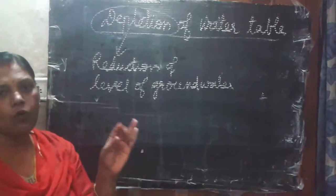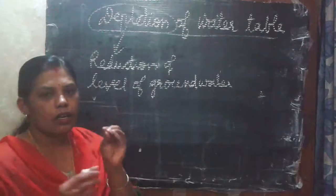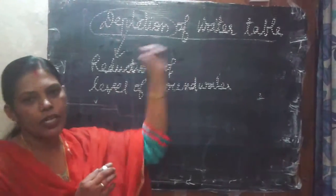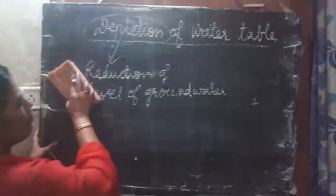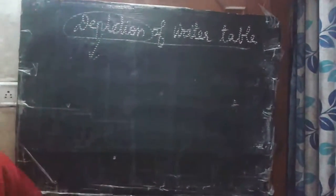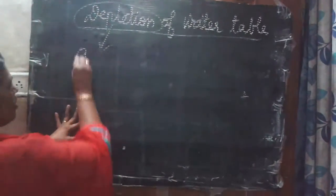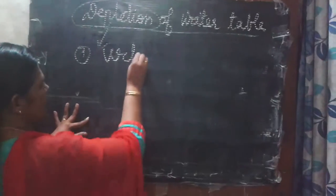Now let's look at the ways that affect the water table. The first one is urbanization.